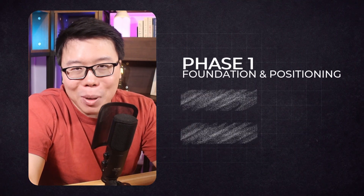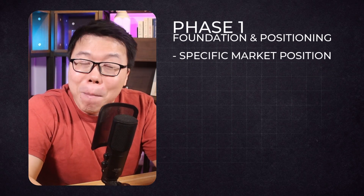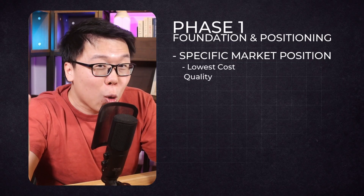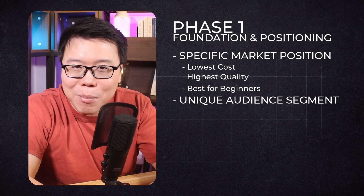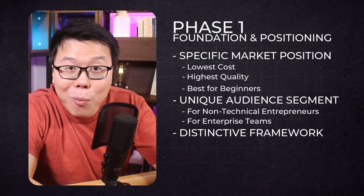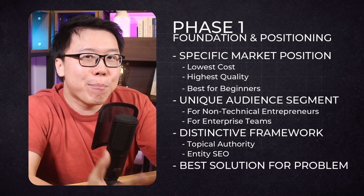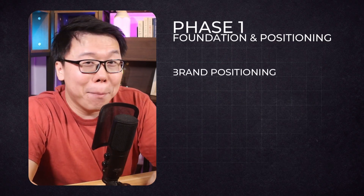If your products or services are good enough, coupled with your outreach strategies, you may be able to build a sustainable brand that Google AI mode will recommend over and over. So if your brand is totally new, there are three phases your brand needs to go through. Phase one is foundation and positioning — defining exactly what you want your brand to be known for. Is it a specific market position such as lowest cost, highest quality, best for beginners? A unique audience segment such as for non-technical entrepreneurs or enterprise teams? A distinctive methodology like best for topical authority or entity SEO? Or a specific problem you solve uniquely well? You need to know your brand positioning.